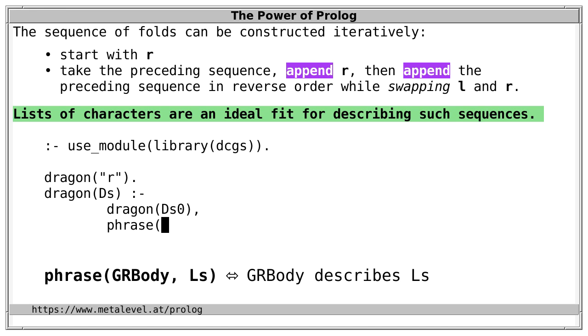Now, let's use DCGs for our task, that is, describing a Dragon Curve. So, let's look at the definition above. What does such a sequence look like? Well, first comes any preceding Dragon Curve sequence. Or, in fact, any Dragon Curve sequence, such as Ds0 in our case.